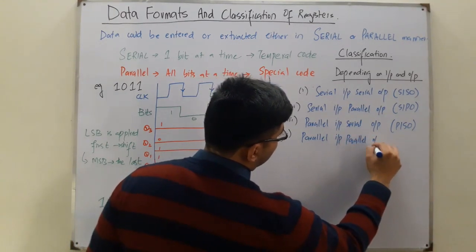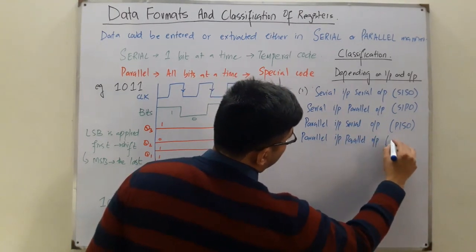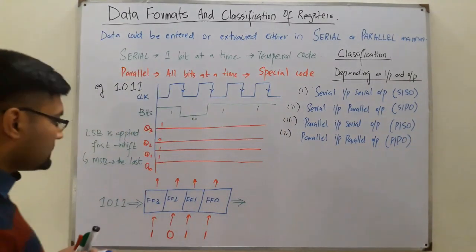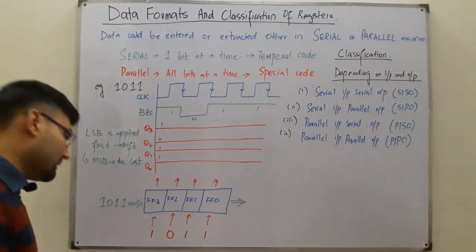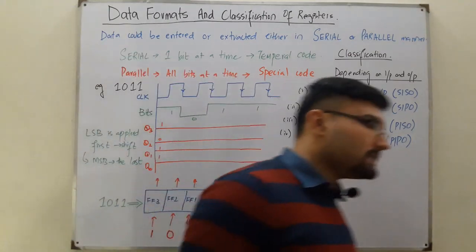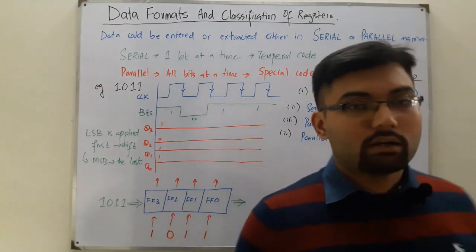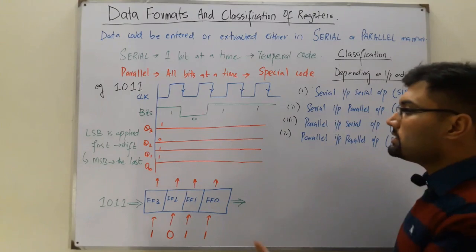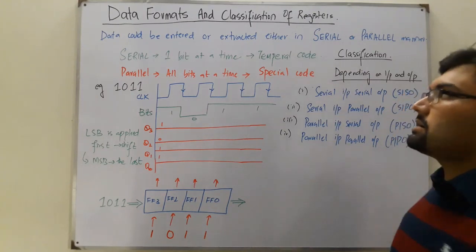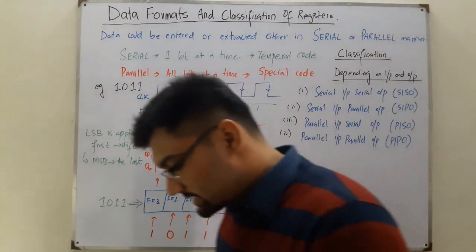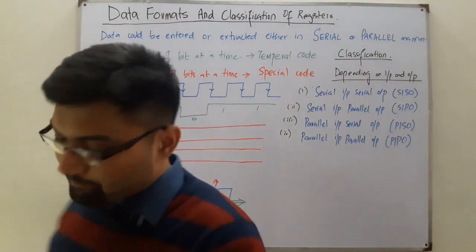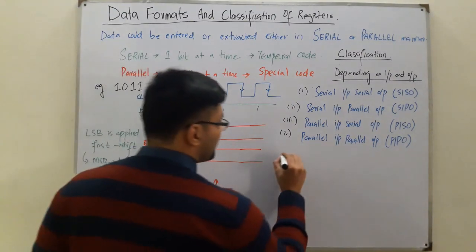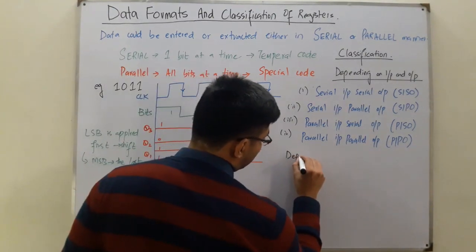The last one is Parallel Input Parallel Output, called PIPO. In this mode the input is provided in a parallel manner — all bits at the same time — and the output is extracted in a parallel manner, again meaning all bits at the same time.